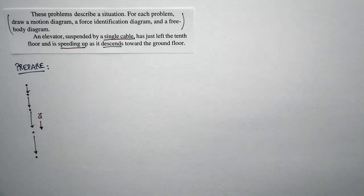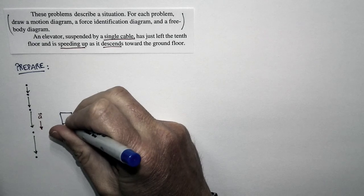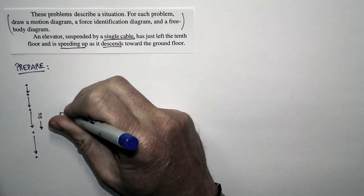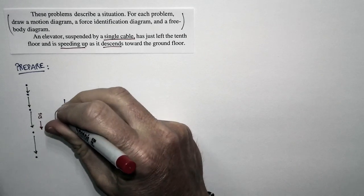Now let's do a force identification diagram. I'm going to draw a picture of my elevator. Here we go. And it's suspended by a single cable. Now remember, in a force identification diagram, what we do is this: I'm going to draw a circle around the elevator.